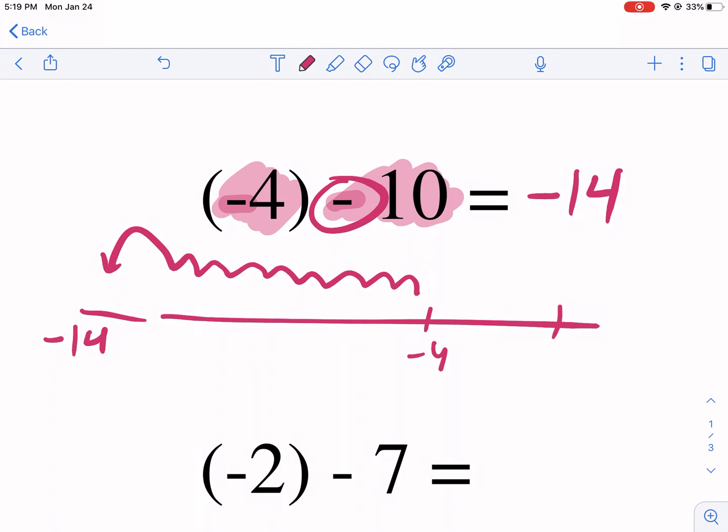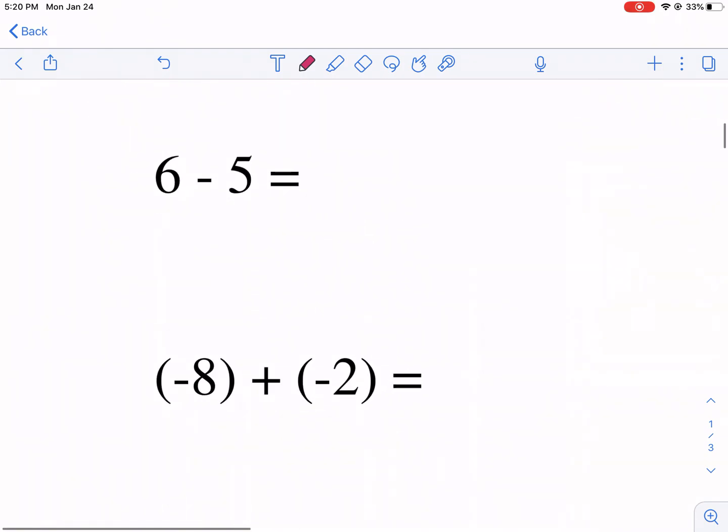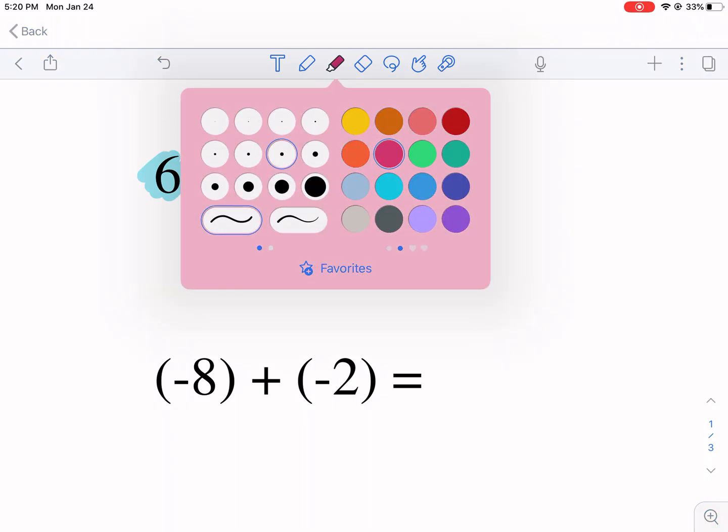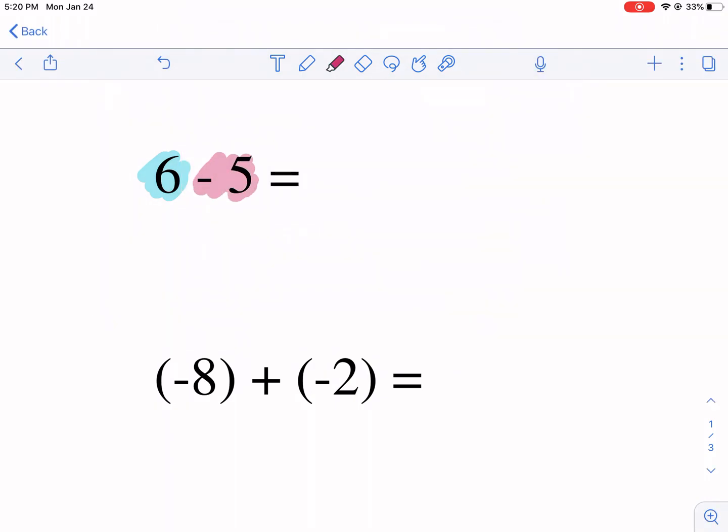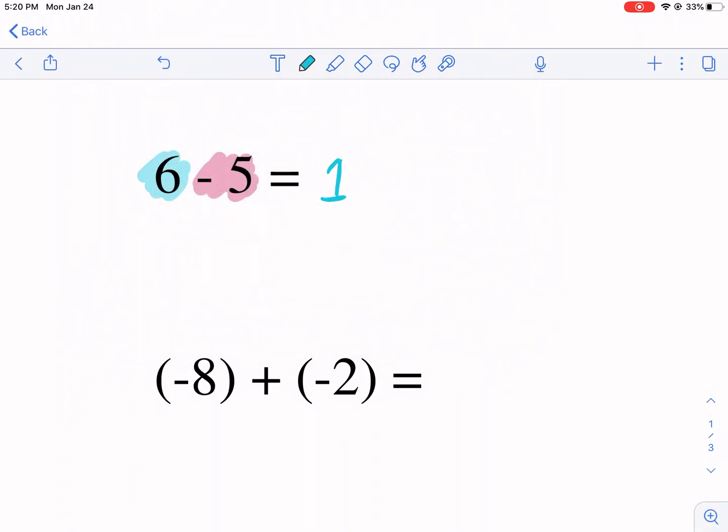So if you want to make a number line real quick, just get your bearings. That's one way. I like thinking of it as teams. Let me know what you guys like. I'm going to do just a couple more. So you understand what I'm talking about. We have a positive six. We have a negative five. The negative five is on the negative team and the positive six is bigger. So it's going to win by one point.